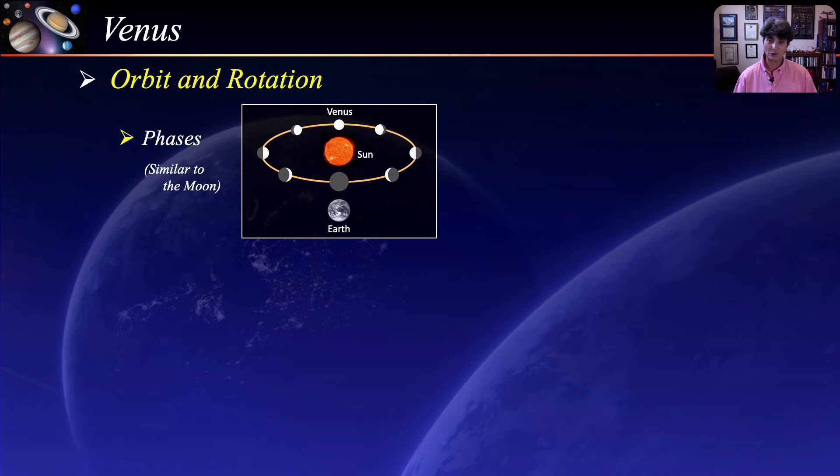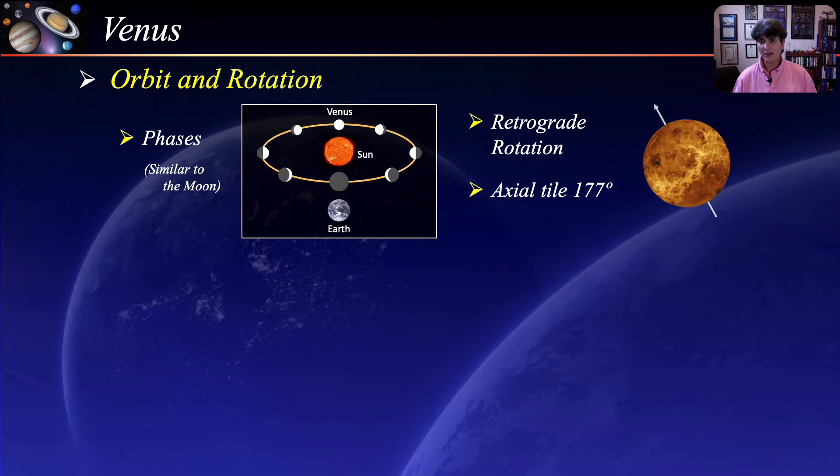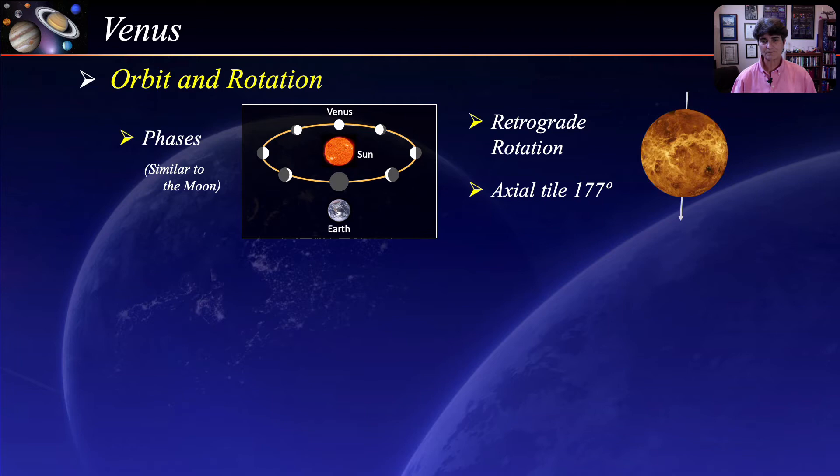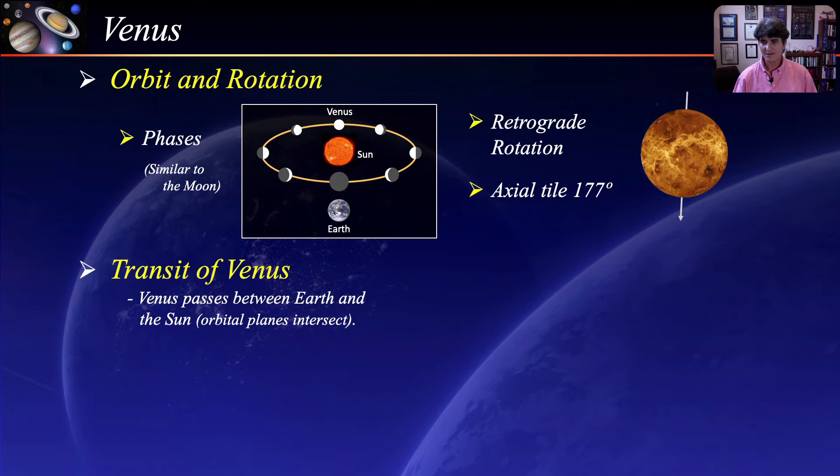Venus undergoes a retrograde rotation with an axial tilt of 177 degrees, so it rotates upside down with respect to the other planets. Among the rarest of predictable astronomical events is the transit of Venus. A transit occurs when Venus passes between the Earth and the Sun and their orbital planes intersect. These are two pictures of the transit taken by the Solar Dynamics Observatory using two different filters.